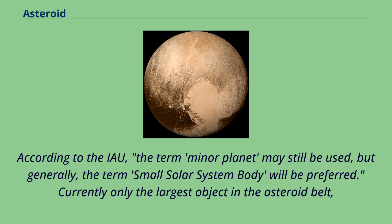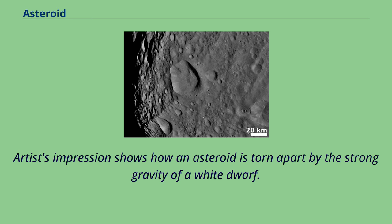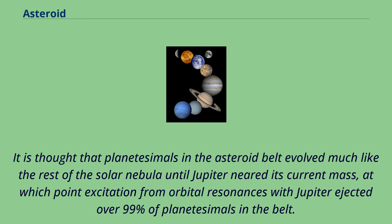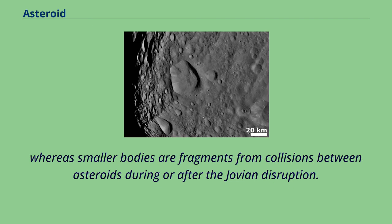Currently only the largest object in the asteroid belt, Ceres, at about 975 kilometers across, has been placed in the dwarf planet category. It is thought that planetesimals in the asteroid belt evolved much like the rest of the solar nebula until Jupiter neared its current mass, at which point excitation from orbital resonances with Jupiter ejected over 99% of planetesimals in the belt. Simulations suggest that asteroids larger than approximately 120 kilometers in diameter accreted during that early era, whereas smaller bodies are fragments from collisions during or after the Jovian disruption.